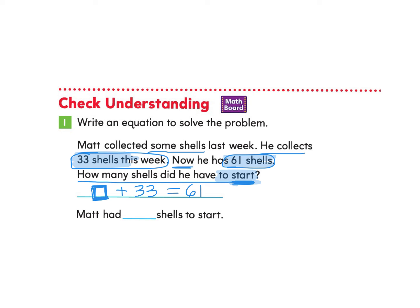And so the way I'm going to choose to find this is I can start with the number 33 and count on to 61 to find that difference. And when I solve this equation, I find that 28 plus 33 makes 61. So I know that Matt had 28 shells to start. Great job.